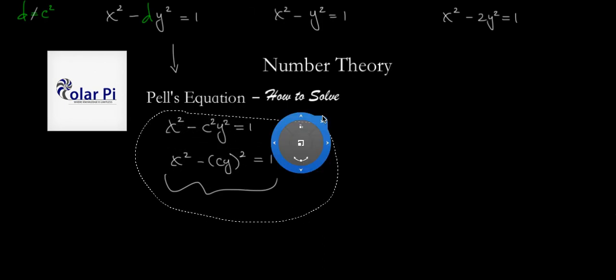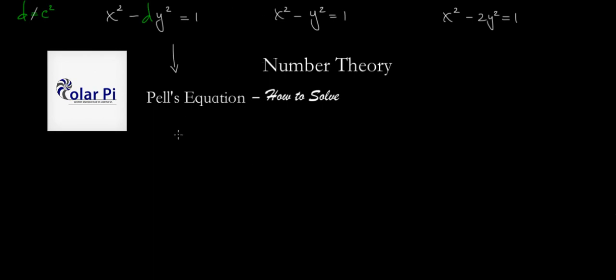Otherwise, how do we solve these equations? First, we can isolate x²: x² = dy² + 1. Since we're seeking positive integer values, we can start with y = 1 and plug that into the right-hand side and look for it to be a perfect square. If not, then we try y = 2, then 3, and so on. This is a brutal way, but we can find solutions using this strategy.